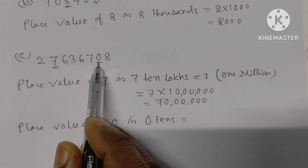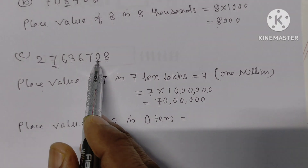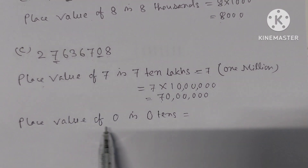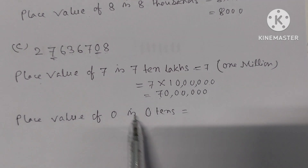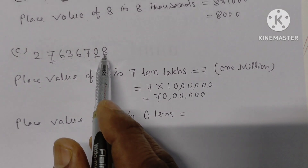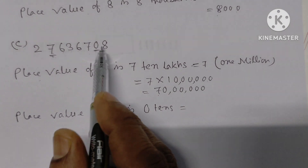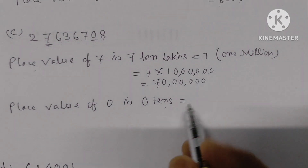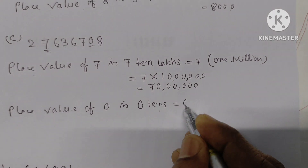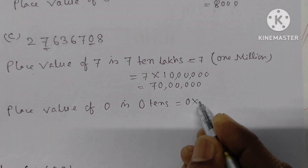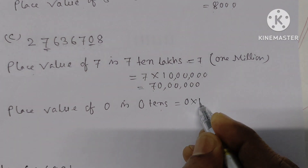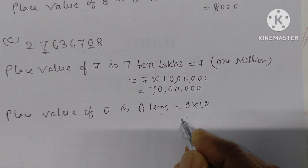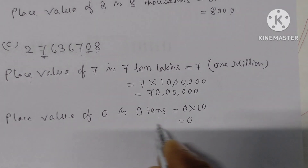Next, the underlined digit 0: it is in the tens place. The place value of 0 is 0 into 10, which equals 0. So the place value of 0 is 0 tens, which is 0.